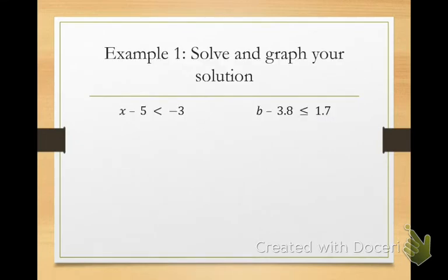So in example one, I have x minus 5 is less than negative 3. For x minus 5 is less than negative 3, what would I do to get x by itself?